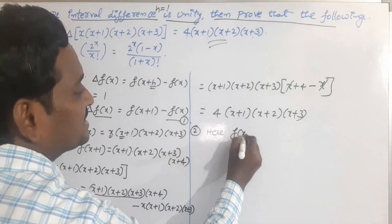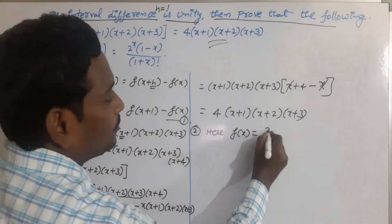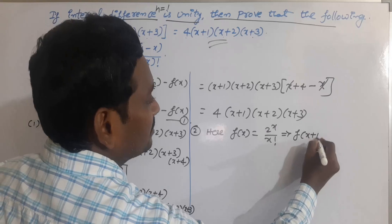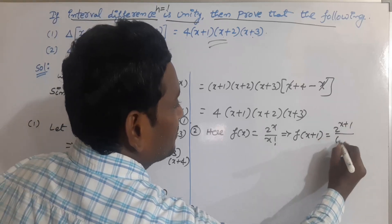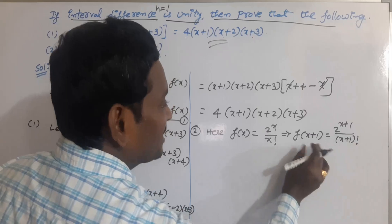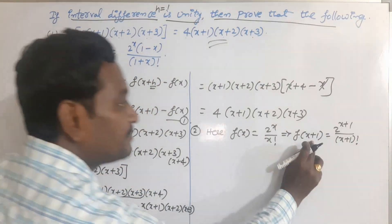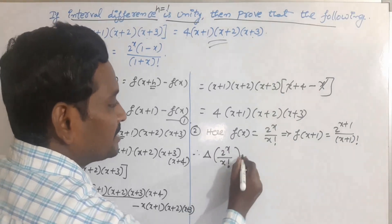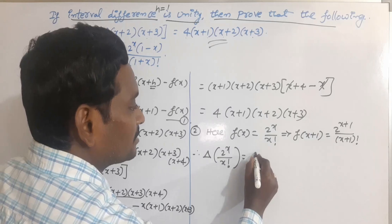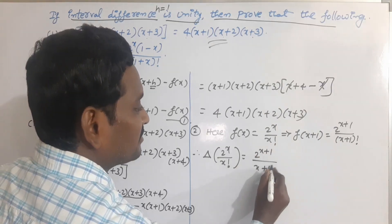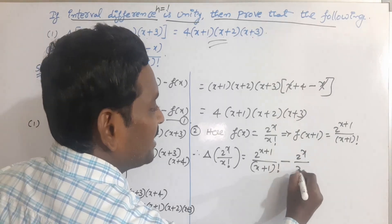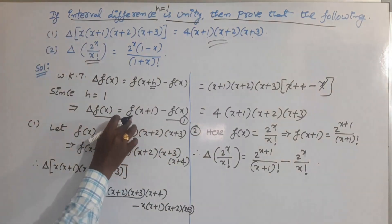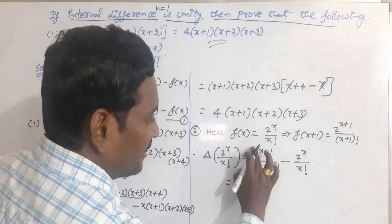For the second problem, f(x) = 2^x / x!. Then f(x+1) = 2^(x+1) / (x+1)!. Applying the definition, delta of 2^x / x! equals f(x+1) minus f(x), which is 2^(x+1)/(x+1)! minus 2^x / x!.